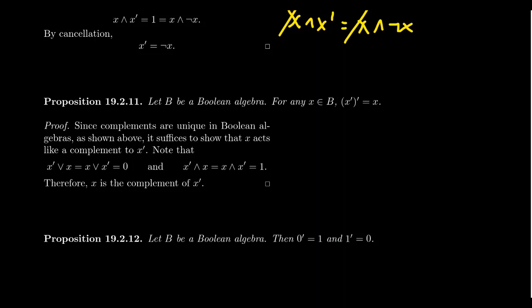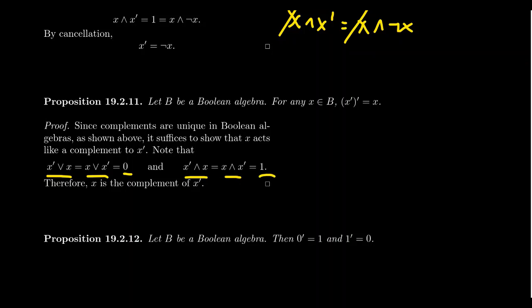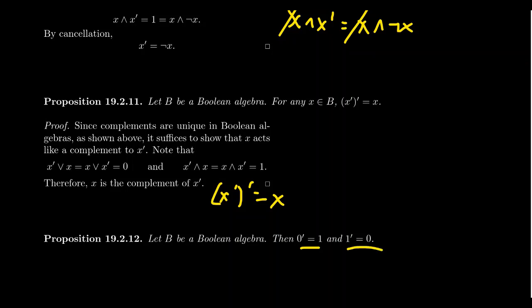An immediate consequence is that the double complement of x equals x. The proof uses uniqueness: x acts like a complement of x-prime, since x-prime join x equals x join x-prime equals zero, and x-prime meet x equals x meet x-prime equals one. By uniqueness of complements, x must be the complement of x-prime, so the complement of the complement of x equals x. As a corollary, zero is the complement of one and one is the complement of zero.